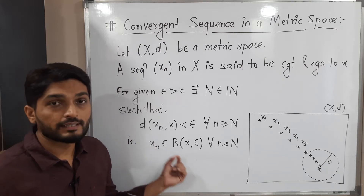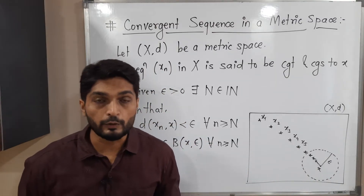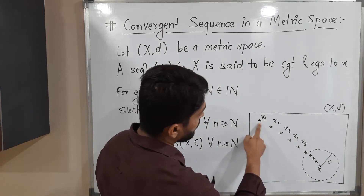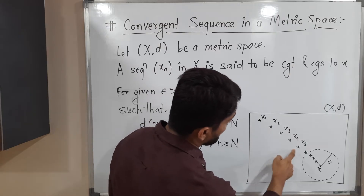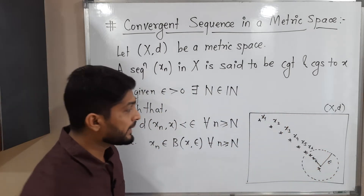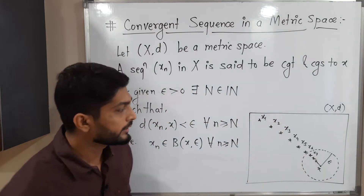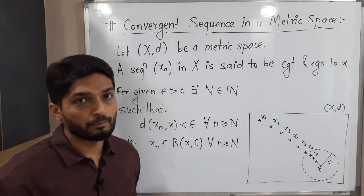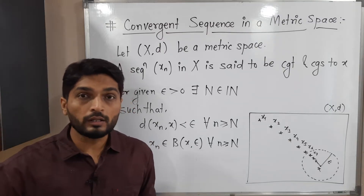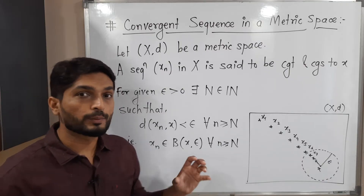All points of the sequence lie inside this ball, but only for n ≥ capital N. Some initial points like X1, X2, X3, X4, X5, X6 lie outside the ball, but X7 lies inside the ball, and X8 and all remaining points lie inside the ball. So here capital N is 7 — meaning all terms from X7 onward lie inside the ball.